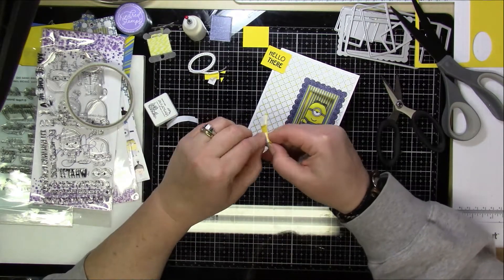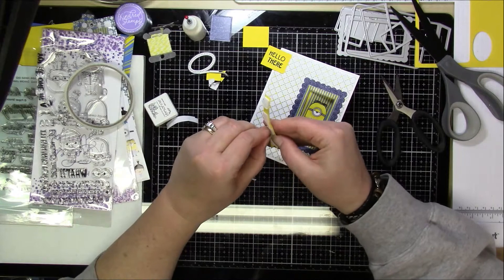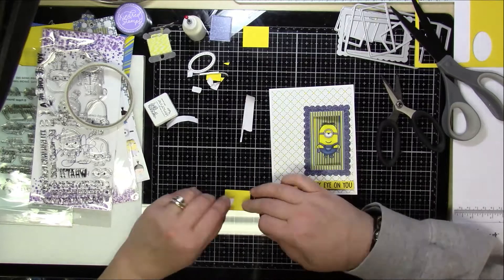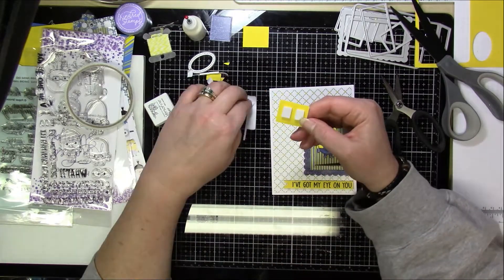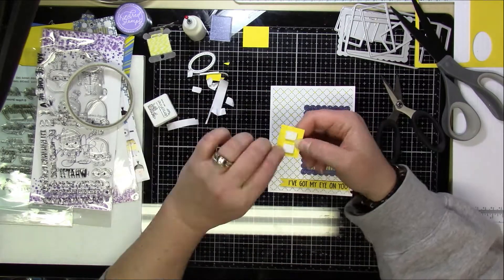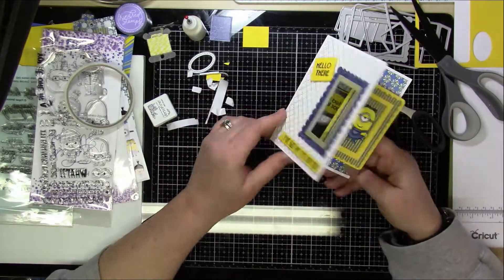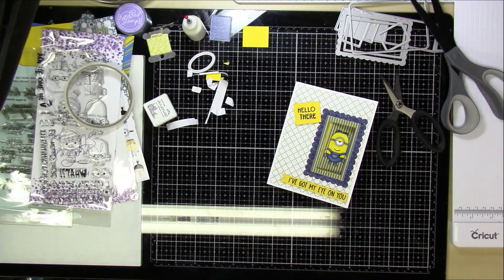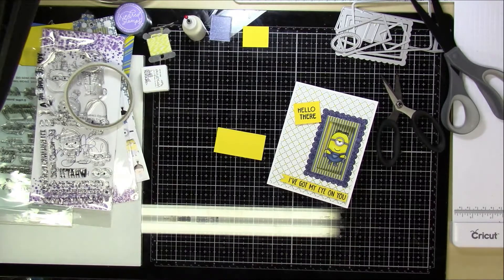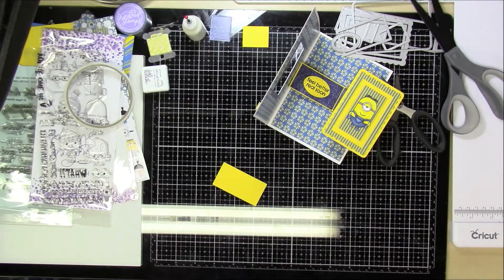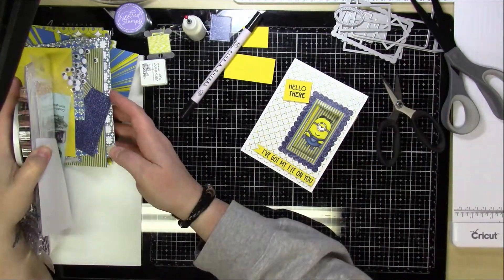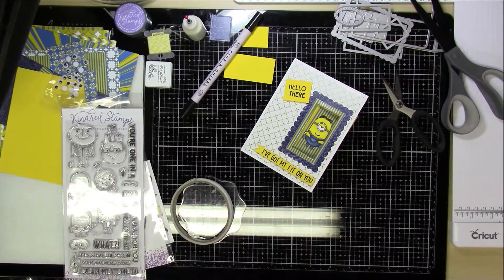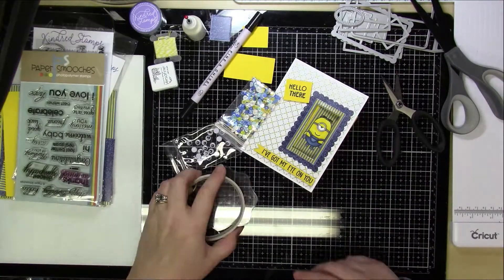And then I also used the sentiment I've got my eye on you from the banana stamp set. I'm going to end up stamping that just on a strip, cutting that strip out, and then just fishtailing one end of it. And that is how I'm going to decorate those things and put those on there. Now I do end up popping up both of the sentiments with some foam tape and some foam squares actually. And then I add sequins and wiggly eyes to this just because I think they were fun and that's what I ended up using for this. So I hope you all enjoyed this video.